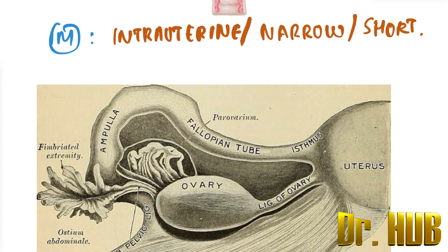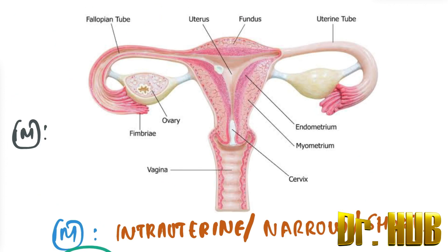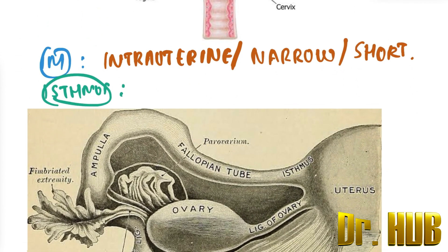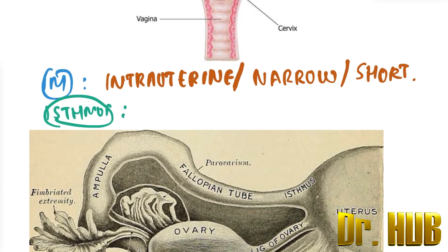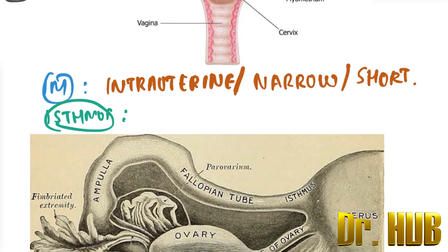Next, the isthmus. The isthmus is the most common site for tubectomy.